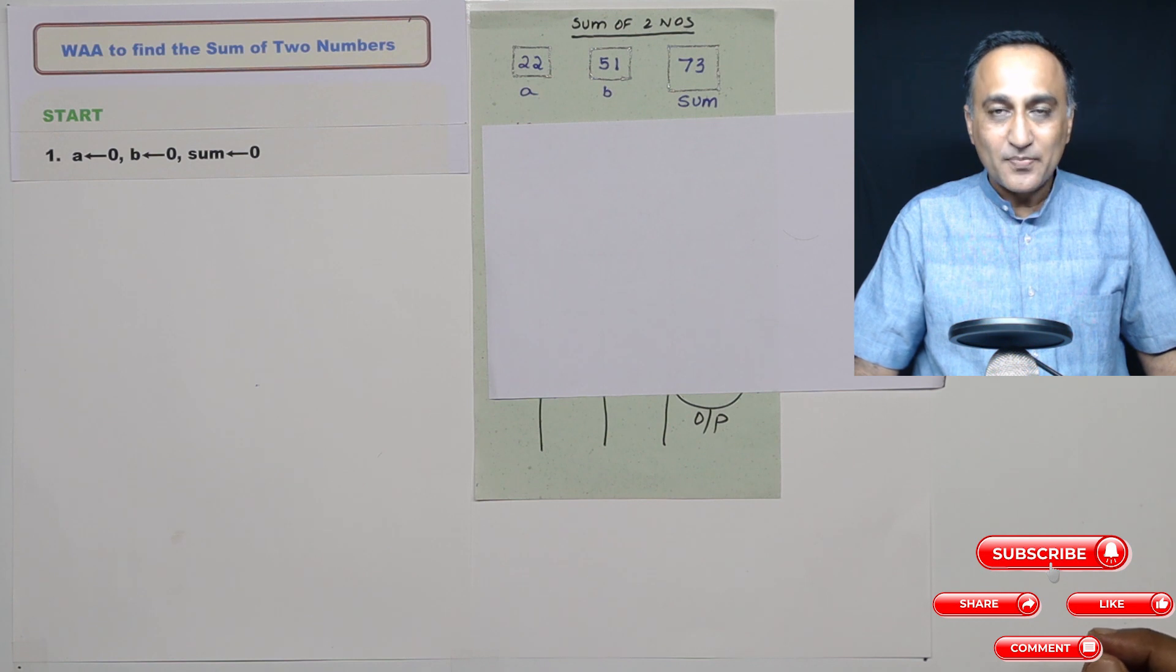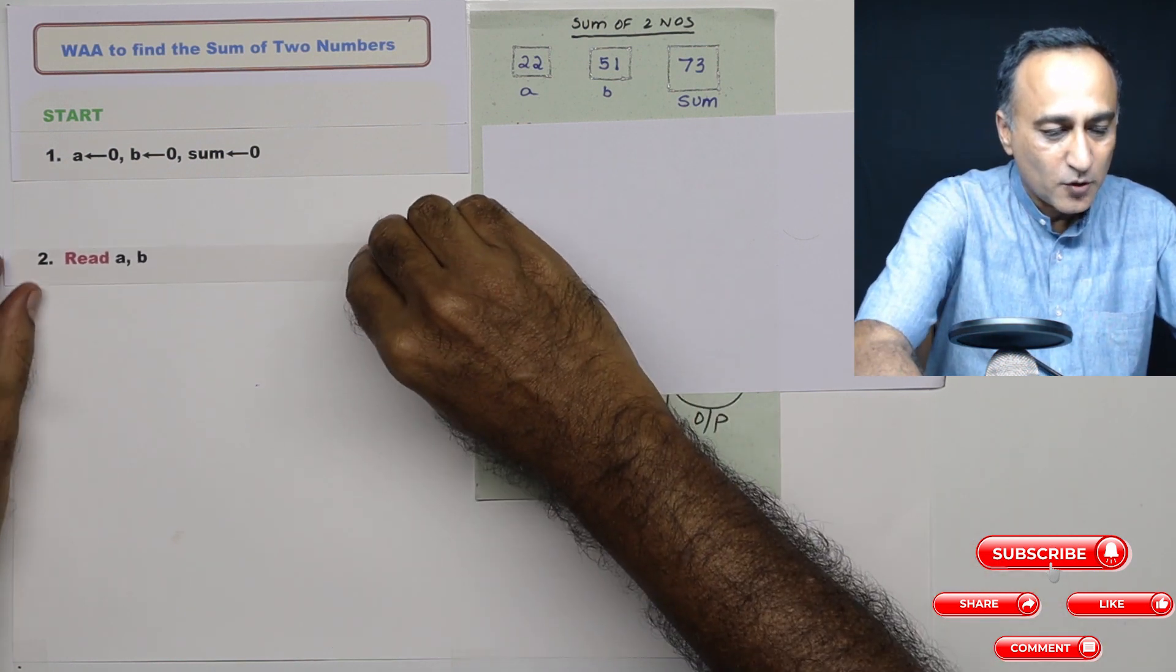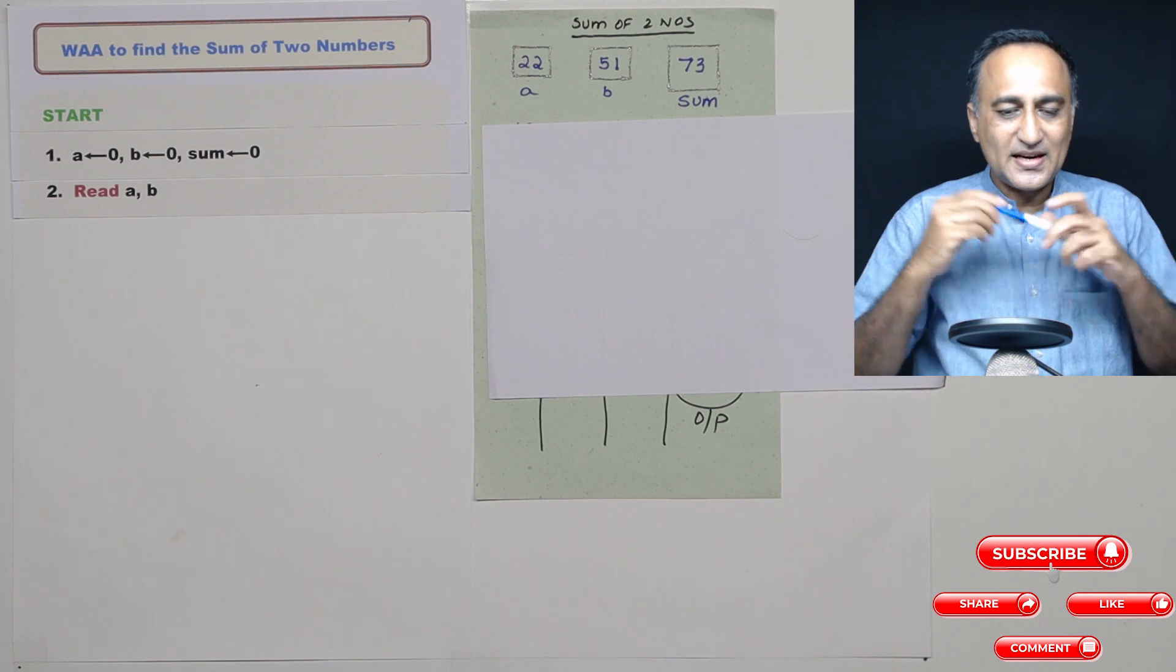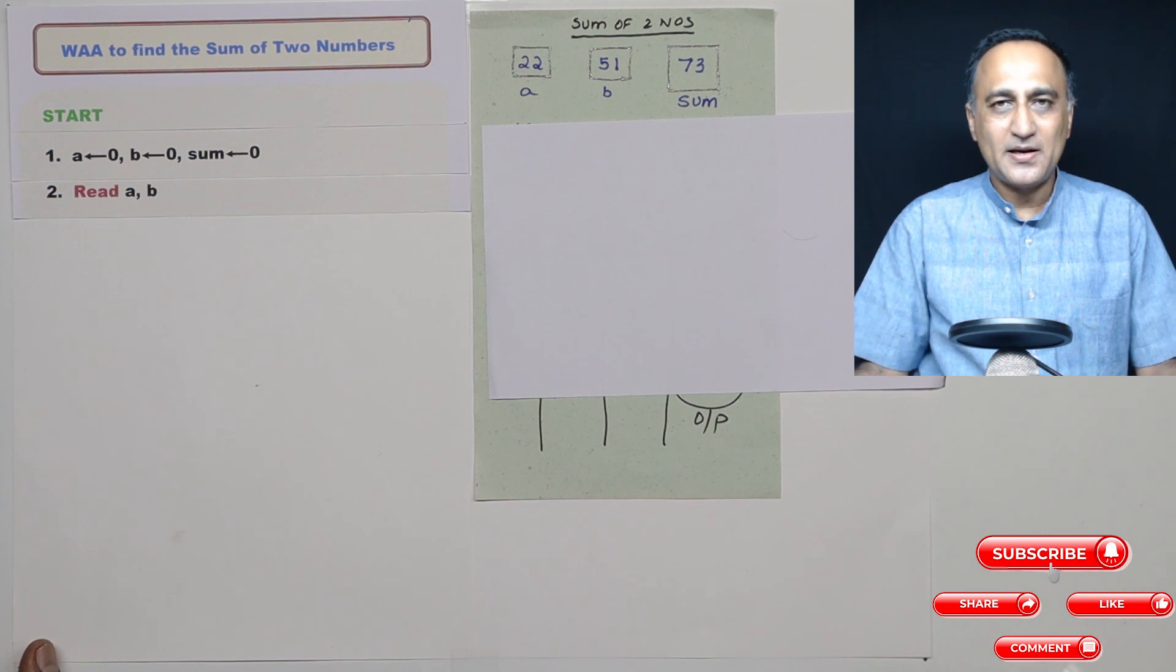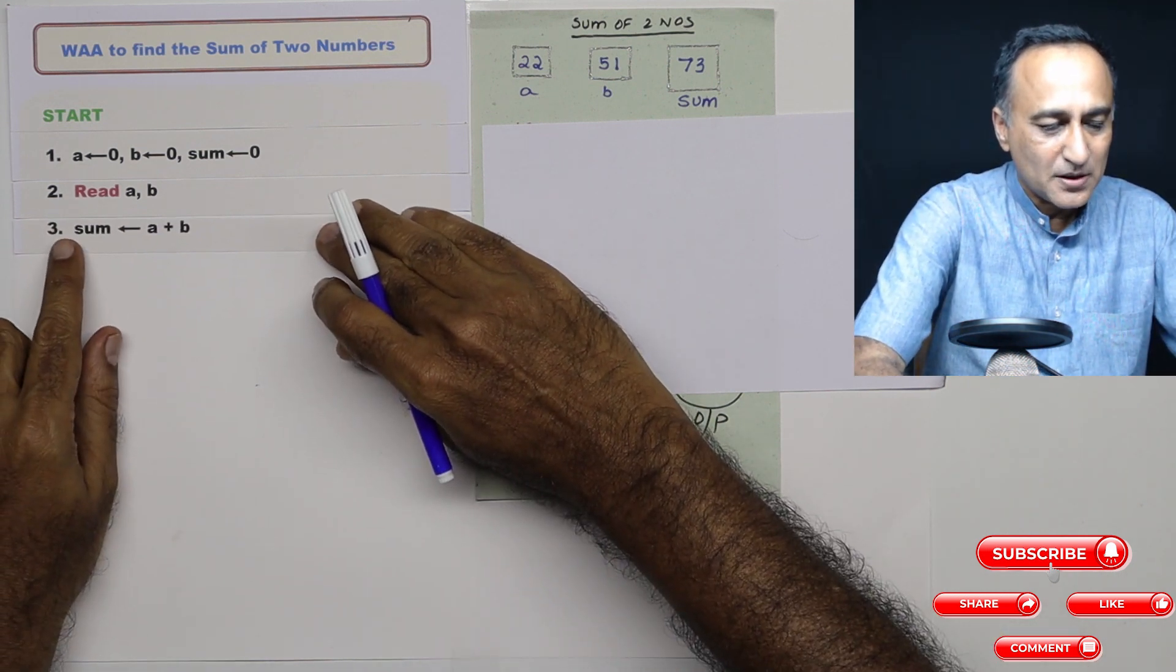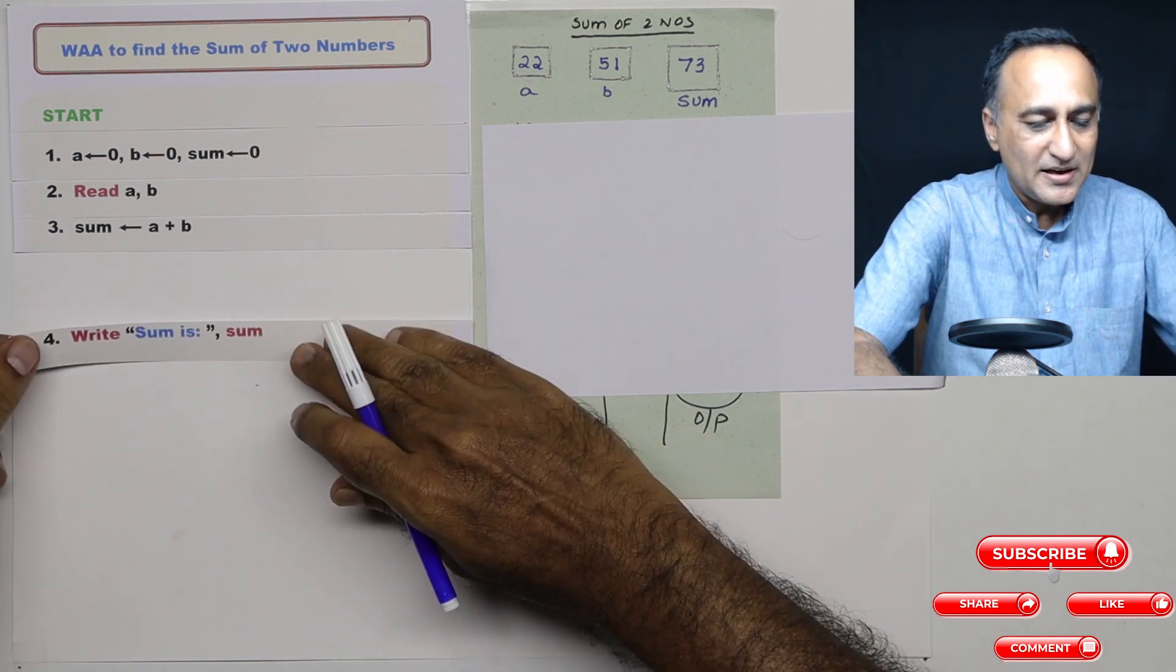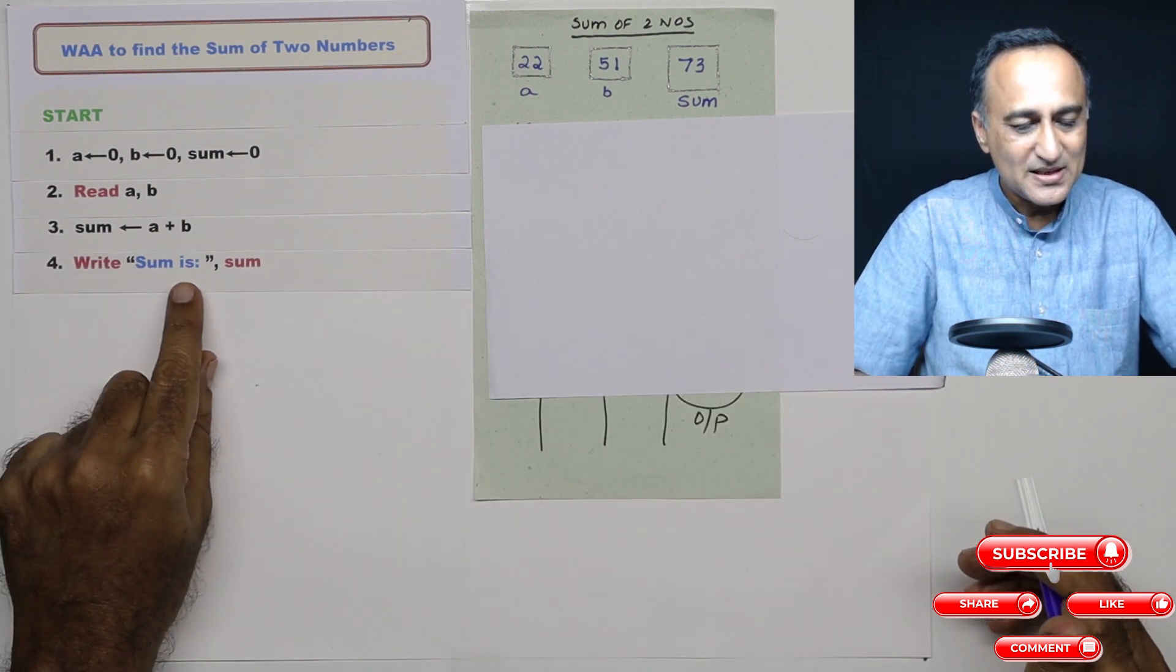Now in order to find the sum, I first need to read the values of A and B into their respective memory locations. So what I am doing here is I am asking the user to enter the value of A and B. So the user, let's say enters the value of A as 22 and B as 51. Now since I have the value of A and B, I can easily calculate the sum. So I can say sum is A plus B.